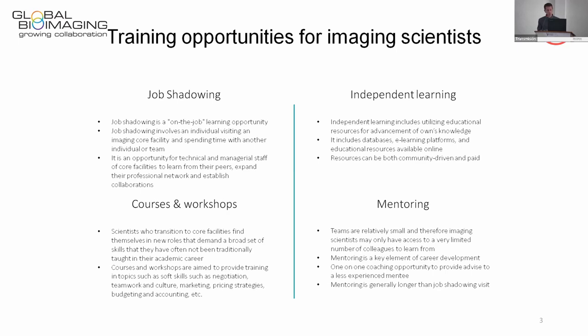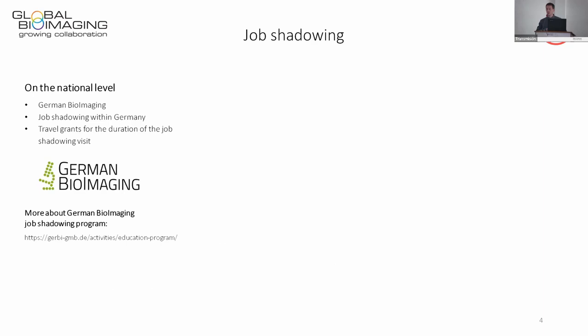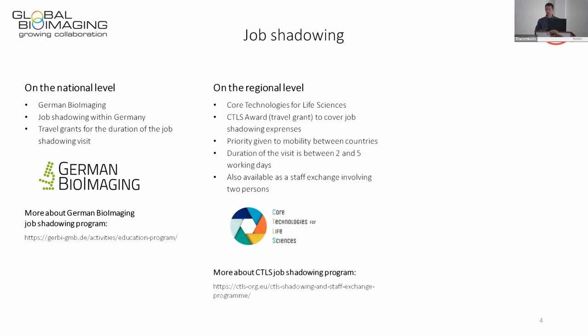Mentoring is a one-on-one coaching opportunity used to advance one's career, where a less experienced mentee is taught by a more experienced mentor. Job shadowing can be set up at three levels: national, regional, and global. A success story at the national level is German BioImaging, one of the first such programs, made successful not just through coordination but also by providing travel grants to cover accommodation and transportation costs.